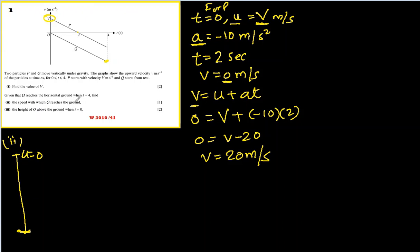What are they asking? The speed with which Q reaches the ground. We have to find that. We know time, four seconds. We know acceleration is minus 10 again. So we can find it. V equals u plus at, so v is unknown, u is zero, plus a is minus 10, time is 4.